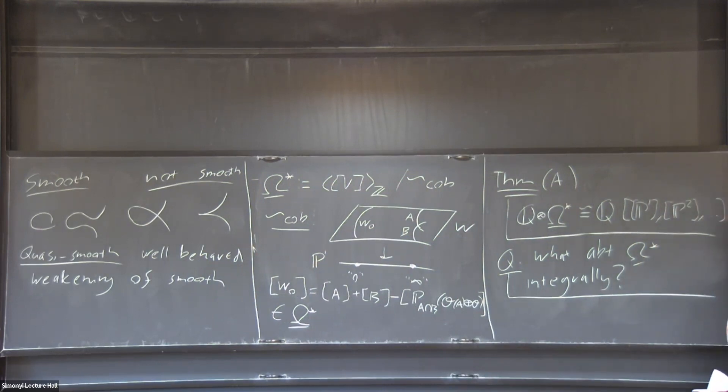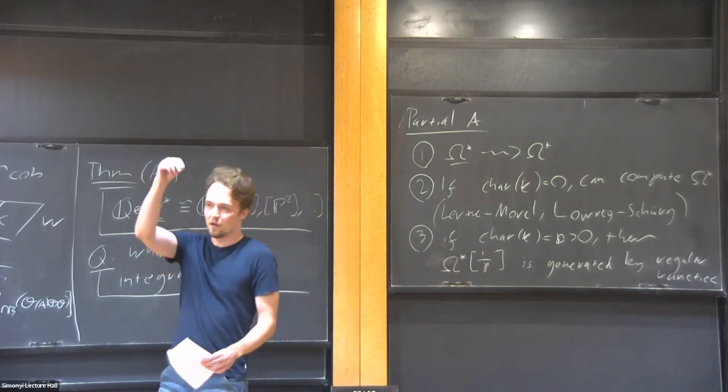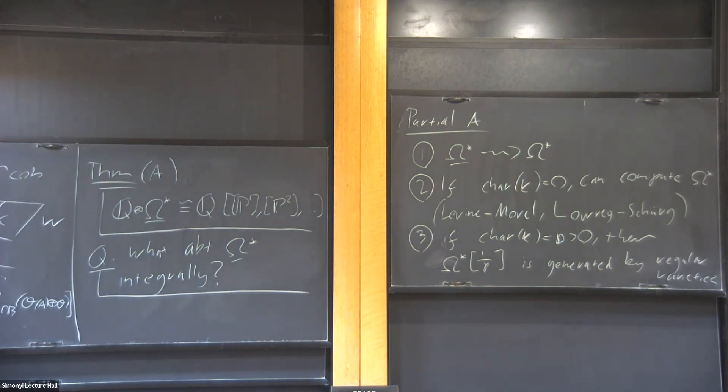I cannot say that they are isomorphic, but of course if you pull back and then push forward, it's just multiplication by the degree, which is a p-power, and this is invertible. So you have a change on it; that's how you can sort of reduce to that.